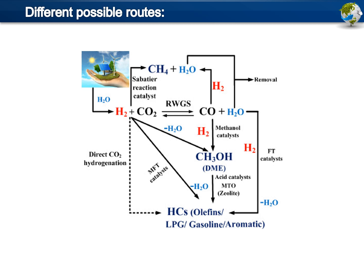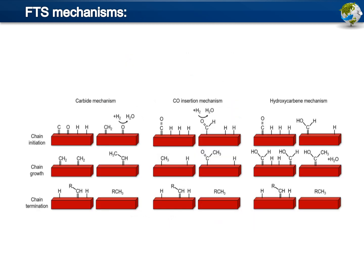There are three main mechanisms proposed for the Fischer-Tropsch reaction: the carbide mechanism, the CO insertion mechanism, and the hydroxycarbene mechanism. All three mechanisms can be divided into three elementary steps: initiation, chain growth, and chain termination. In the carbide mechanism, it presumes the direct dissociation of CO and hydrogen followed by the hydrogenation of carbon atoms and the polymerization of CHx groups, with chain termination taking place by abstraction or addition of a hydrogen atom.